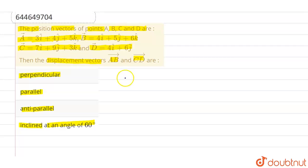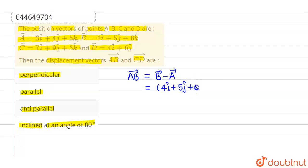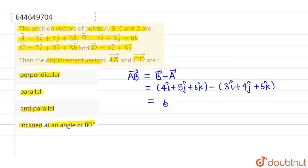Let us first find vector AB. Vector AB equals vector B minus vector A. Vector B is 4i cap plus 5j cap plus 6k cap minus vector A which is 3i cap plus 4j cap plus 5k cap. Solving: 4 minus 3 gives 1, so i cap; 5 minus 4 gives 1, so plus j cap; 6 minus 5 gives 1, so plus k cap. So vector AB equals i cap plus j cap plus k cap.